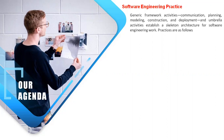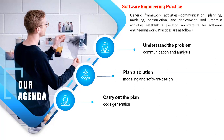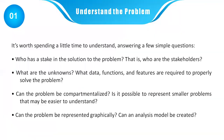George Polya, in his book, described the essence of software engineering practice as: understand the problem, plan a solution, carry out the plan, and examine the results for accuracy. Coming to understanding the problem, it is worth spending time answering a few simple questions — who has to take the solution? That is, who are the stakeholders? Stakeholders are the people directly or indirectly involved in the project, who will use the software or product or give advice. We also need to understand what the unknowns are — what data, functions and features are required to properly solve the problem.